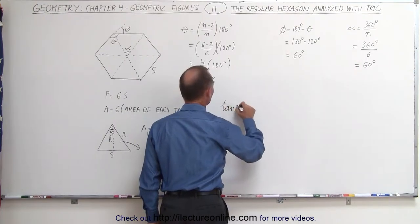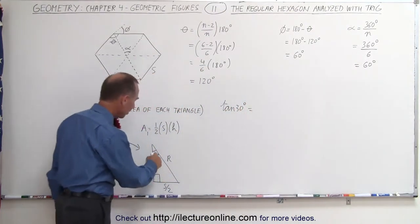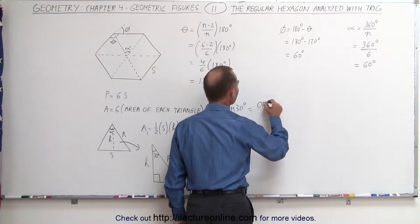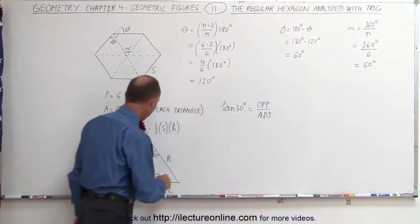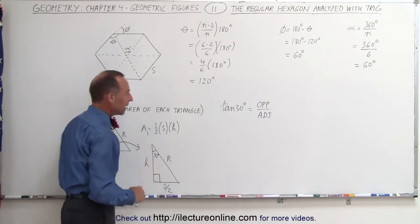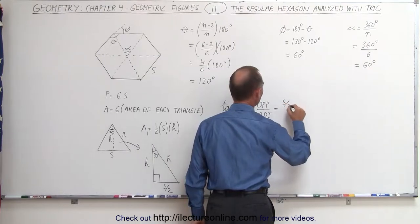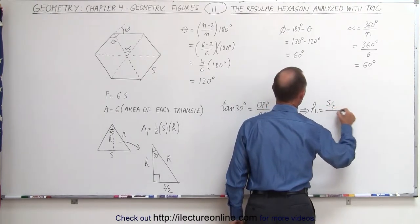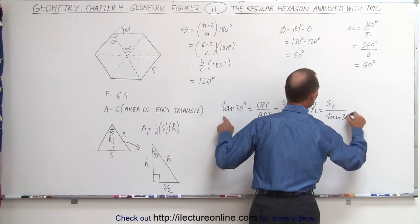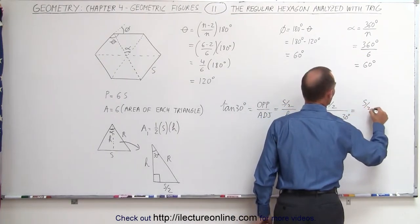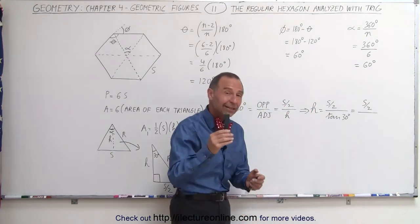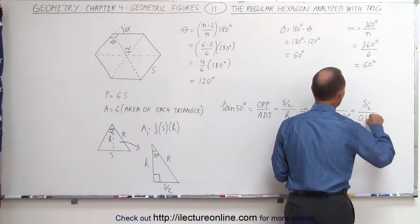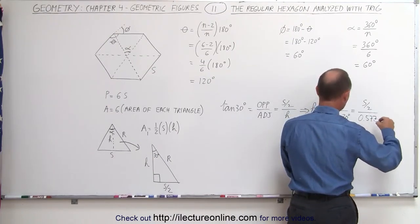We can define the tangent of 30 degrees — here's the 30-degree angle — by definition equal to the ratio of the opposite side divided by the adjacent side. The opposite side to the angle is S over 2, and the adjacent side is H. So the tangent of 30° equals (S/2) divided by H. That means H equals (S/2) divided by the tangent of 30 degrees, which equals (S/2) divided by 0.577.